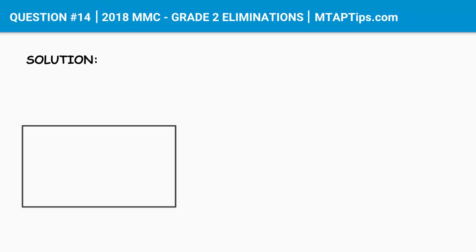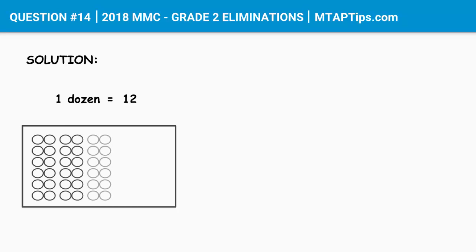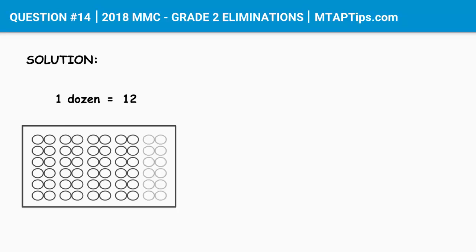We know that one dozen is equal to 12. For one dozen of glasses, we'll have 12 glasses. It was mentioned that there are five dozens of glasses — one, two, three, four, five. To easily know how many there are, we'll just multiply five, which is five dozen, times 12, which is 12 pieces per dozen, and we'll have 60. There are a total of 60 glasses in this box.